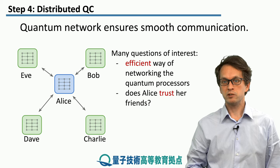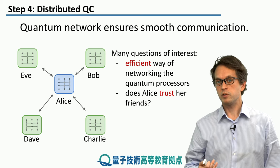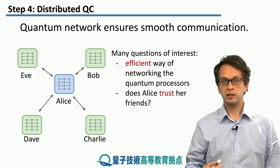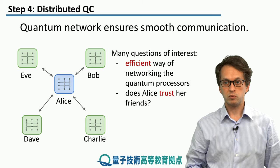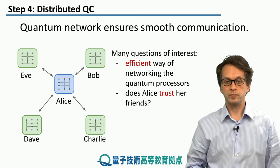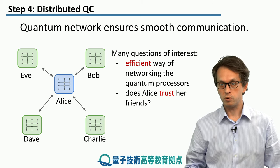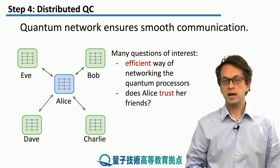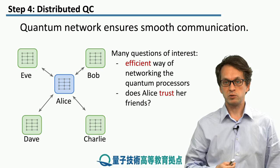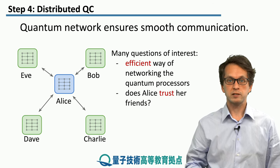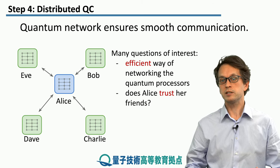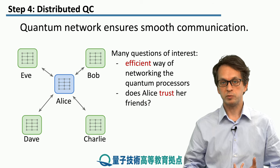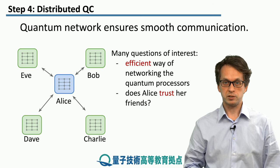There are many questions of interest, such as what is the most efficient way of networking the quantum processors together? How many messages do they need to exchange in order to coordinate their computational efforts? And also issues like trust — how can Alice trust the parties involved, and how can the quantum network help her in this situation?